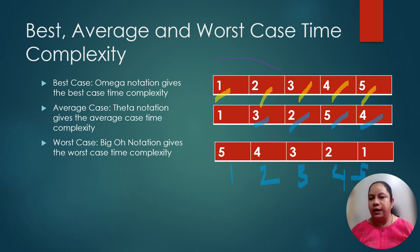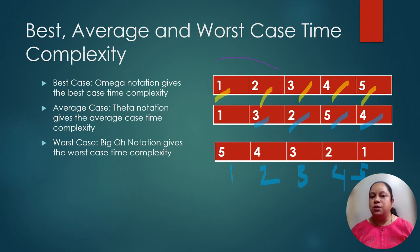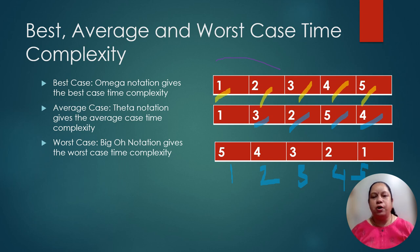In the second array, we observe that the numbers 3 and 2 are not in sorted order and need to be exchanged, and 5 and 4 also need to be exchanged to get the sorted output. Some amount of work is required by the algorithm — this is the average case, represented by Theta notation. In the last case, the data is exactly in descending order while we want ascending order, so a lot of work needs to be done by the algorithm. This is the worst case, and Big O notation gives the worst case time complexity.